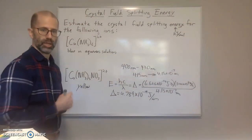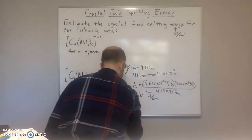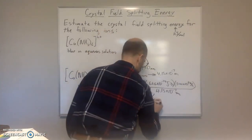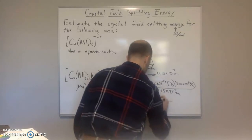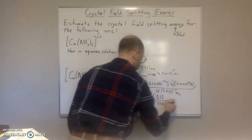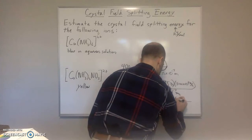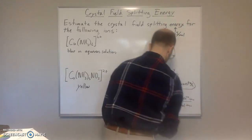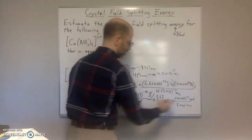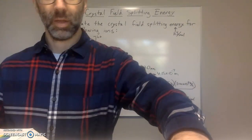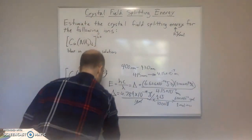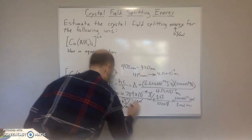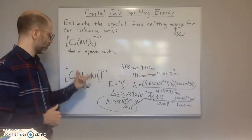Once again, they want us to convert that to kilojoules per mole. So we have joules over ions, multiply by 1 kilojoule over 1,000 joules — joules cancels out. Then multiply by 6.022 times 10 to the 23rd ions over 1 mole of ions — number of ions cancels out. When we calculate that, we get 288, so delta is equal to 288 kilojoules per mole. That is the crystal field splitting energy for this complex ion.